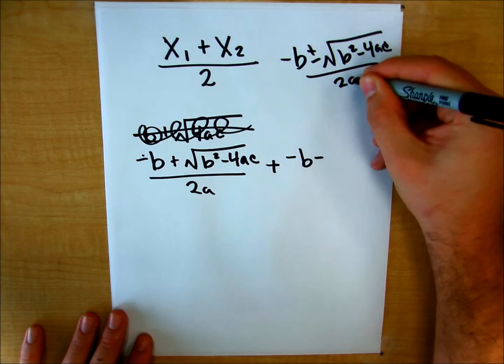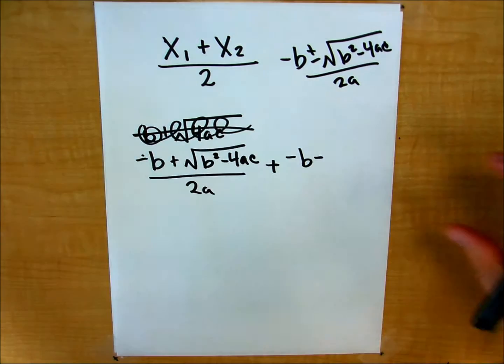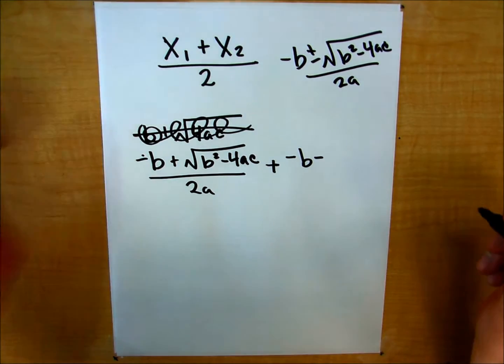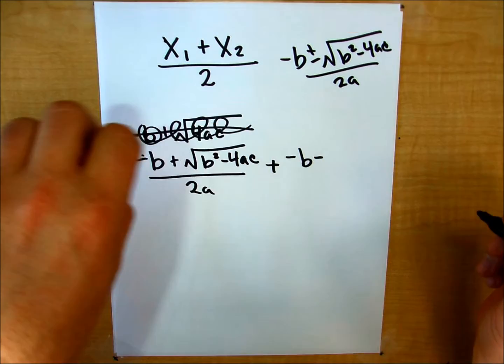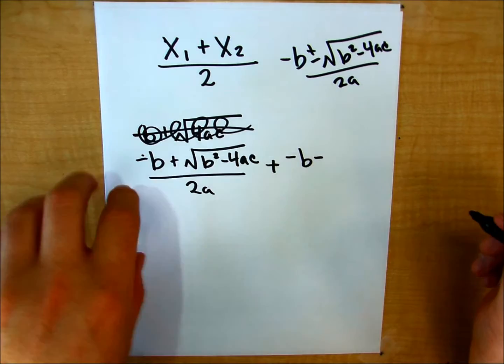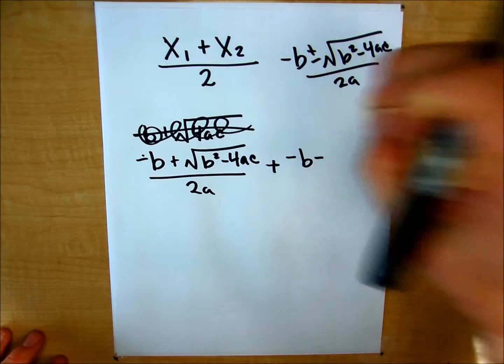So I'm just splitting them up into the two individual zeros. Negative b plus square root of b squared minus 4ac all over 2a. And minus.